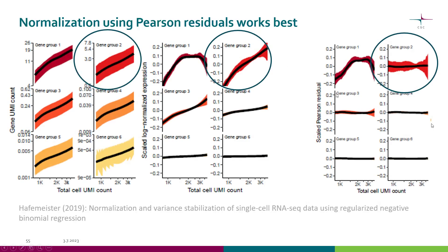After SC-transform, we actually managed to deal also with the medium expressing and high expressing genes. It's only the really high expressing ones that still have a problem. This image is from the paper by Hafermeister et al., where you can also read a more detailed description of this method.